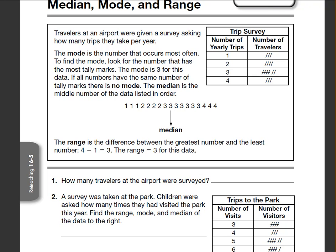Okay, good morning or good afternoon, everybody. This is 16-5, which is finding the mean, the mode, and the range.